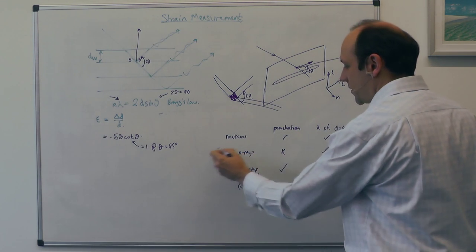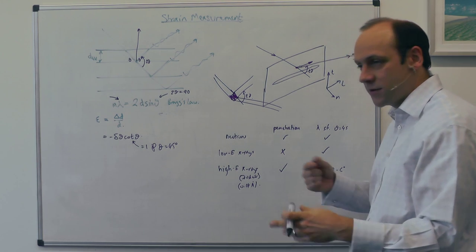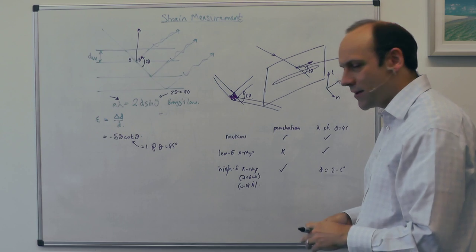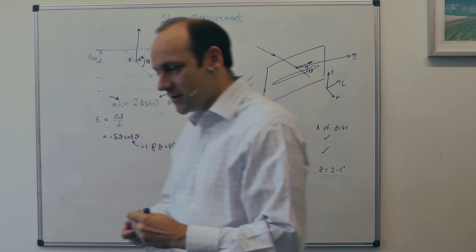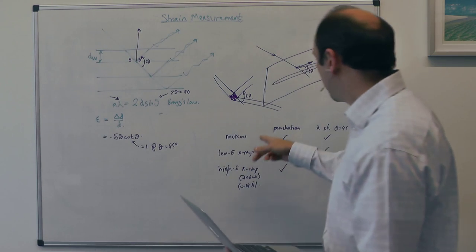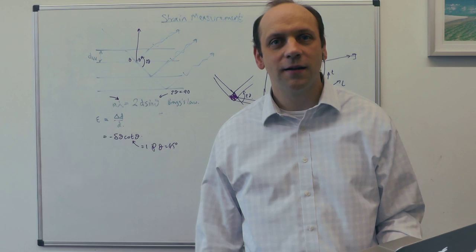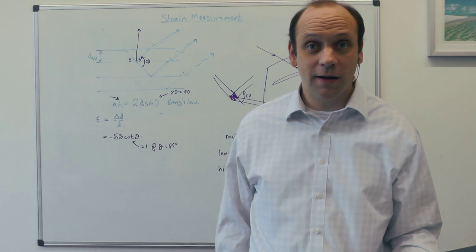So, there is a way of coping with this low-penetration depth of low-energy X-rays to measure the strains in the surface, which is called the sine-squared-ψ method. But that's a bit more complicated, so I'm not going to talk about this in a second-year course. But for neutrons, well, that's fine. You go to a nuclear reactor, and you tap off a beam of neutrons from the side of the reactor. And that's what's being done in this picture.